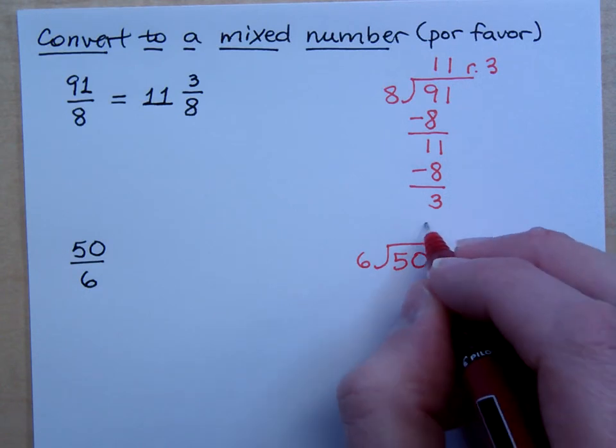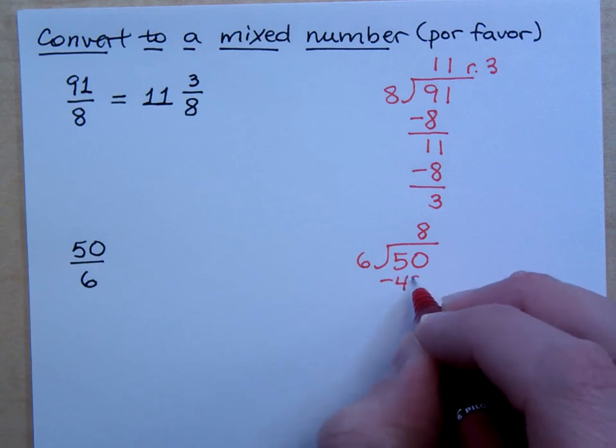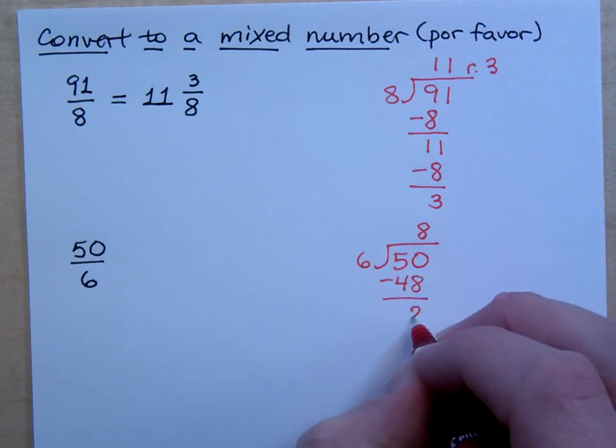Yeah. So 6 goes into 50 how many times? 8. It goes in 8 times. So that's 48 with a remainder of? 2. 2.